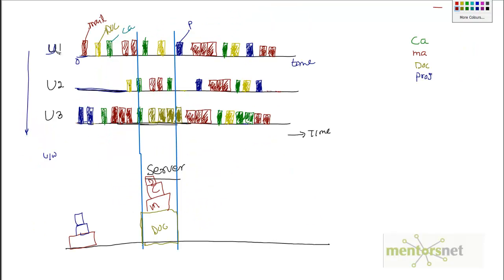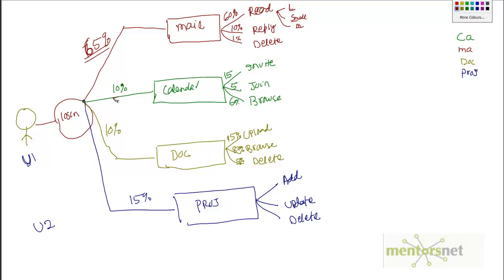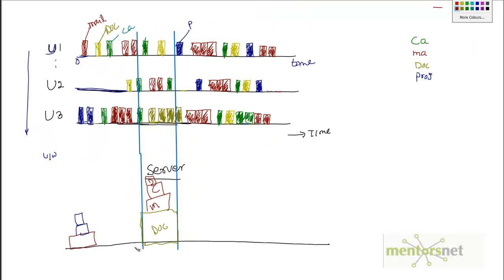A lot of the time, people make a mistake while designing a workload — instead of randomizing, the workload ends up doing a lot of email at one time, then a lot of calendar at another time. That is completely wrong and not a good way to design a workload. The important question is: why did I put 65%, 10%, 10%, and 15%? You learn this from your business users. For an existing system, you can find the distribution from the server logs.